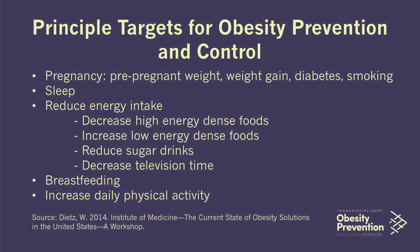Let's think about some of the principal targets that have come about for obesity prevention and control, largely based on work done by the Institute of Medicine. Some critical targets include: during pregnancy, encouraging women to have a healthy pregnancy weight and be careful about weight gain; getting lots of sleep — and I know that can be difficult as a college student trying to balance many things, but sleep is really critical not only for reducing your risk of obesity but also for doing well as a student; reducing energy intake; and increasing physical activity. These are just some of the important targets for reducing obesity risk.